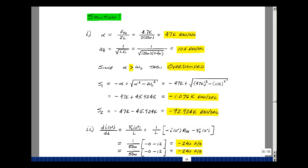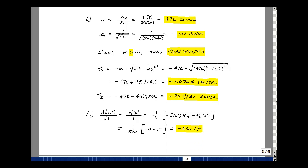We have a formula for the derivative of the current in our series circuit at 0 plus using the initial conditions at 0 minus. Our inductance is 50 millihenries. The initial current in this example was 0, but we put an initial condition on the capacitor of 12 volts. It turns out to be minus 240 amps per second.